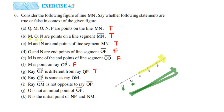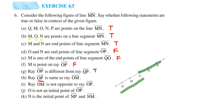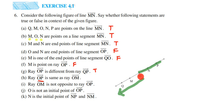The next statement is: ray OP is the same as ray OM. Ray OP extends towards P, and we can continue from the right side. Ray OM has O as a starting point and extends towards M endlessly in the opposite direction. So they are both different and not the same. The answer is false.